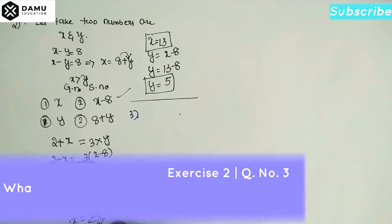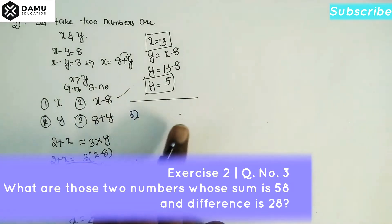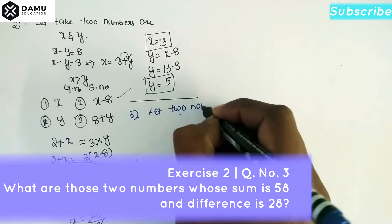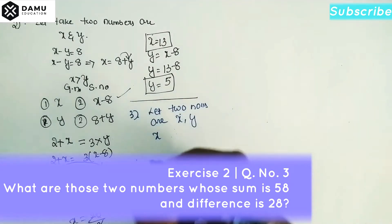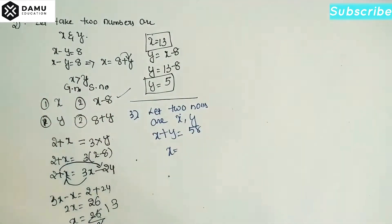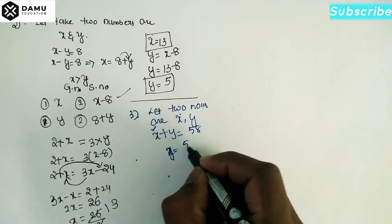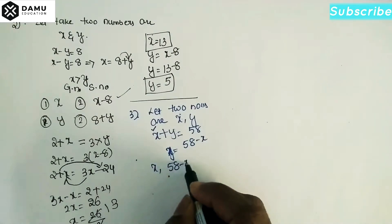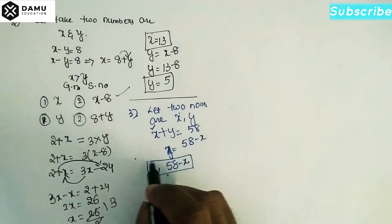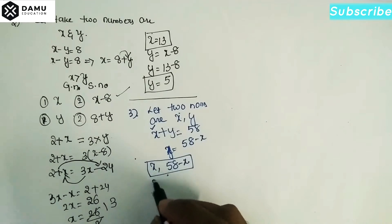Thanks for watching. Now the third question: what are those two numbers whose sum is 58 and whose difference is 28? Let's take two numbers x and y. We are given x plus y equals 58, so using one variable, y equals 58 minus x.